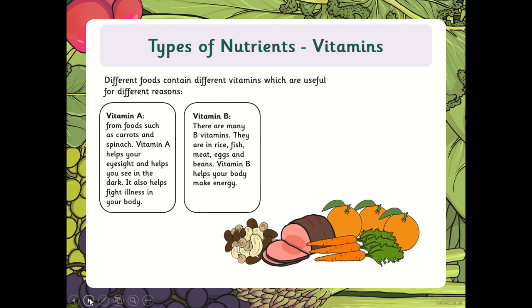There are many B vitamins and they are found in rice, fish, meat, eggs, and beans. Vitamin B helps your body make energy.